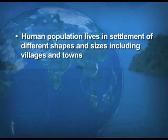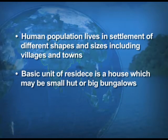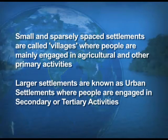Human population lives in settlements of different shapes and sizes, including villages and towns. The basic unit of residence is a house, which may be a small hut or a big bungalow. Small and sparsely spaced settlements are called villages, where people are mainly engaged in agricultural and other primary activities. Large settlements are generally urban settlements where people are engaged in non-agricultural activities — secondary or tertiary activities.